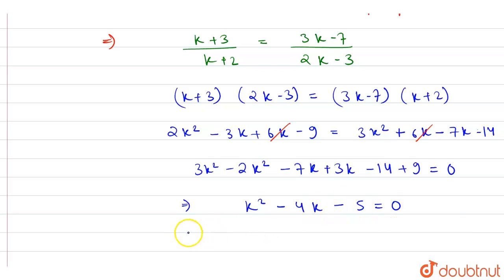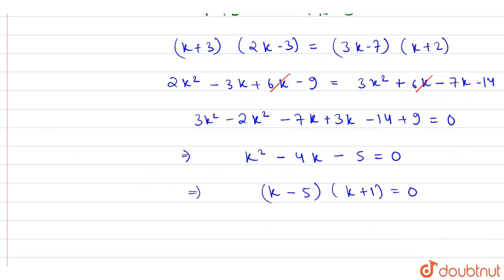This can easily be factored as K-5 into K+1 equal to 0. From this we can say that K is equal to 5...